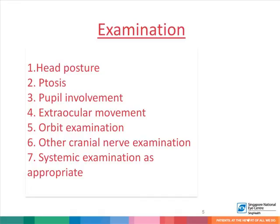When examining a patient with diplopia, there are a few key features that must be kept in mind: abnormal head posture, presence of ptosis, involvement of the pupil, what the extraocular movements are like, whether the orbit is within normal limits, if there are any other cranial nerves involved, and systemic examination as suggested by the history and examination.